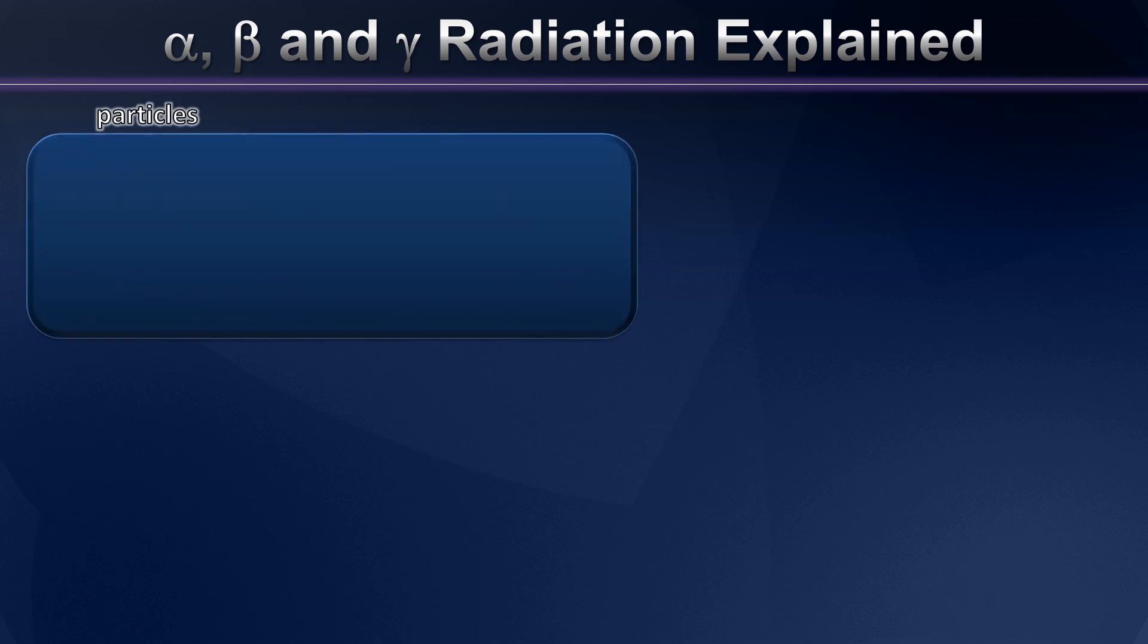Now we all know the nuclei of atoms contain neutrons and protons. But what you might not have thought about yet is that they can also absorb and release electrons and even photons. And actually there are many more particles that can participate in radiation, but we're going to deal with just these four since we're getting an introductory lecture here.